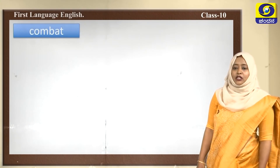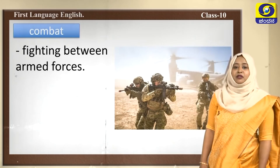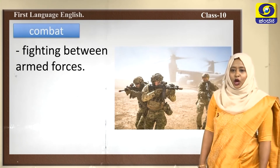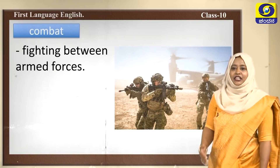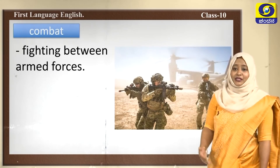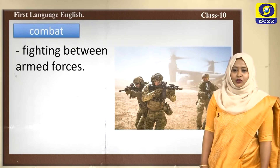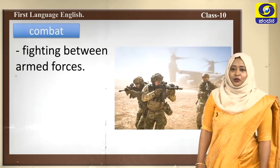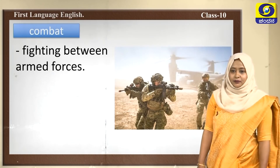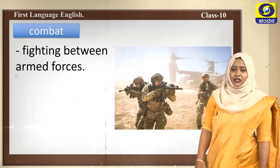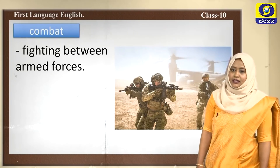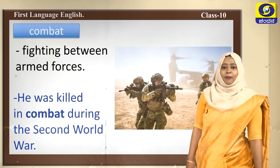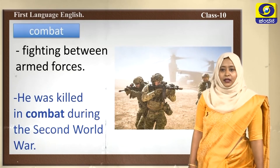Armor is something that a person is covered with — when people go out for wars they wear protective shields, armors, and headgear so that they don't get hurt easily. The next word is combat, meaning fighting between armed forces. In olden times it was common that kingdoms would fight each other for prosperity and power. Example: He was killed in combat during the Second World War.